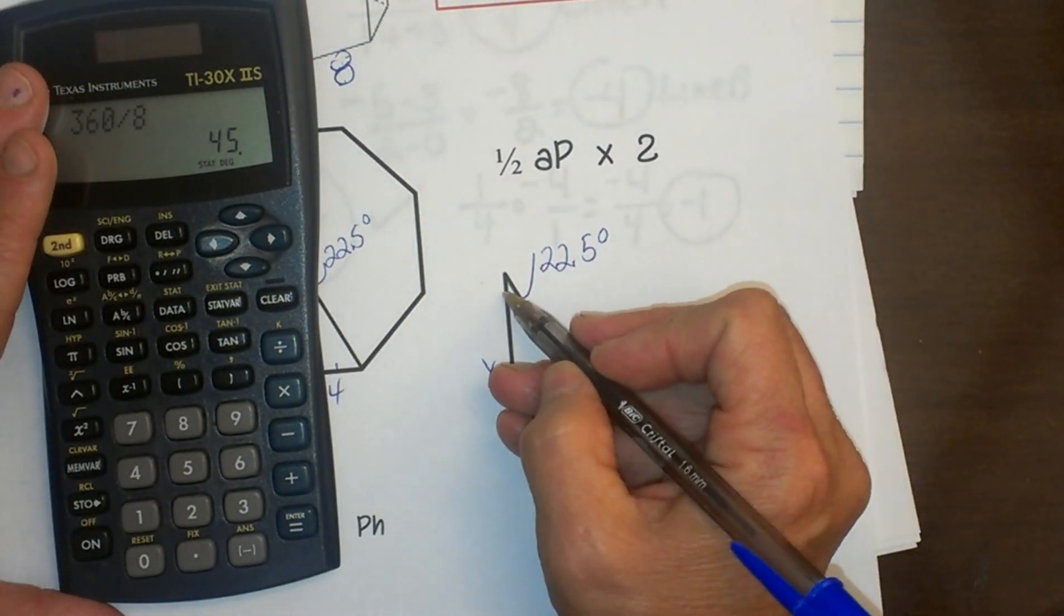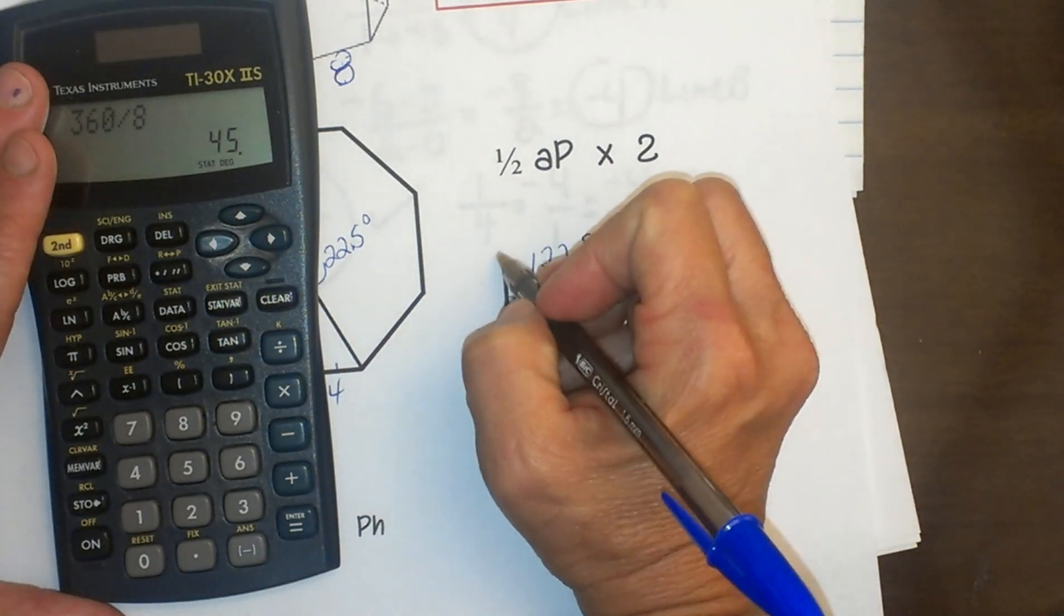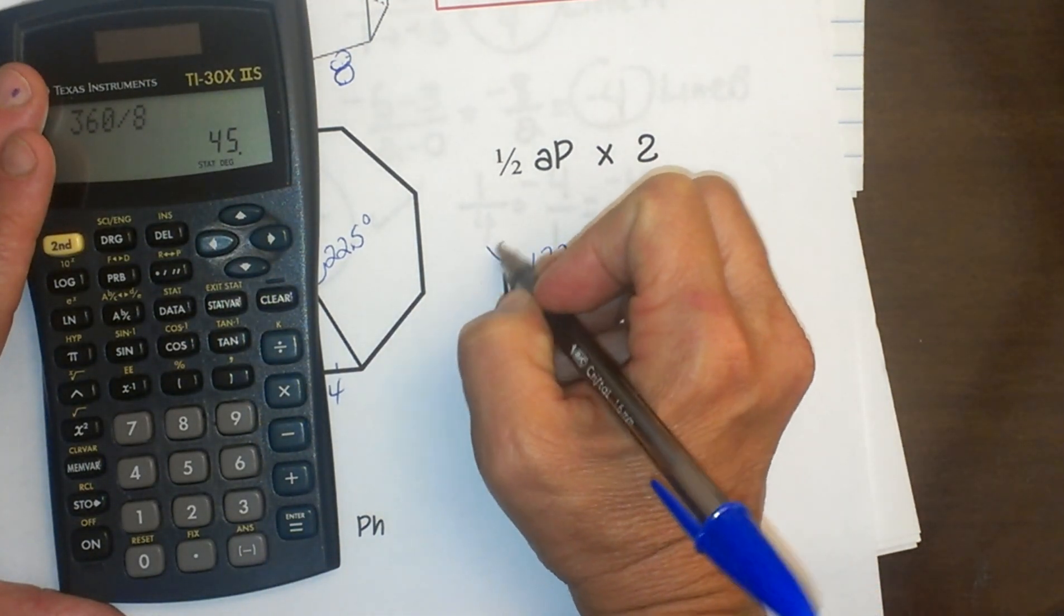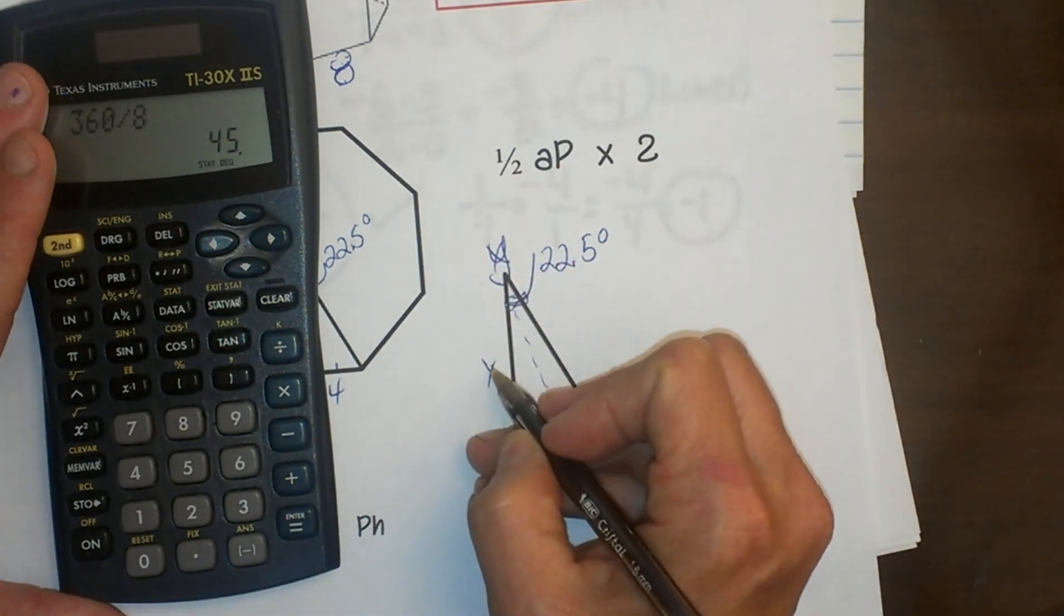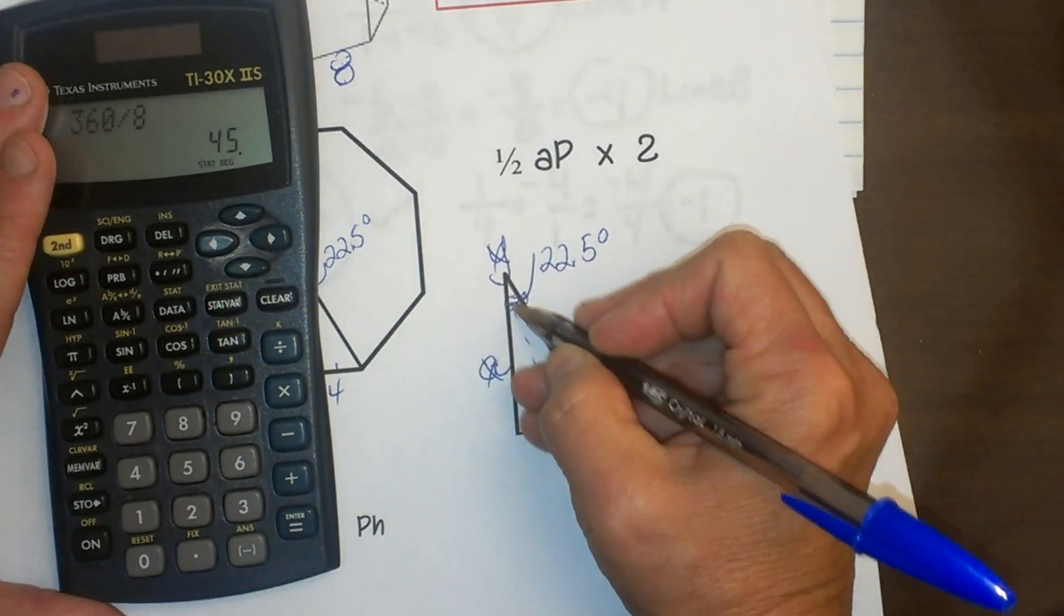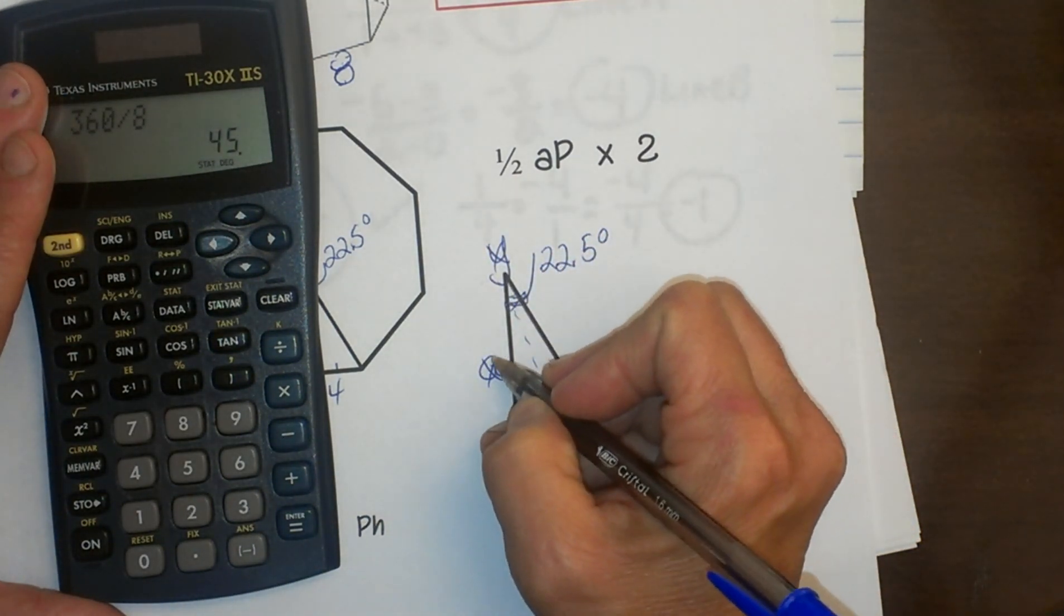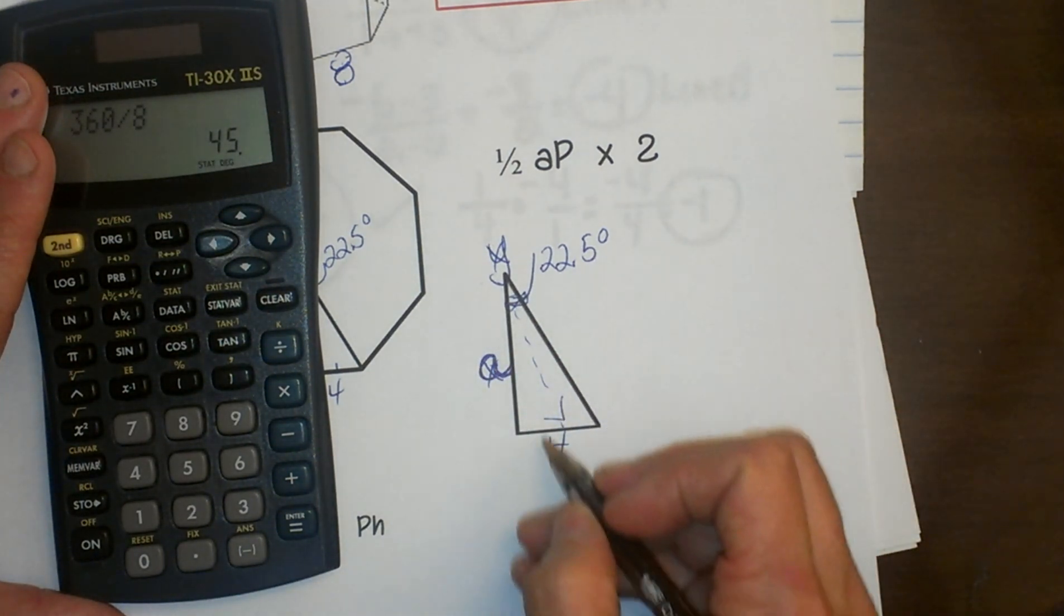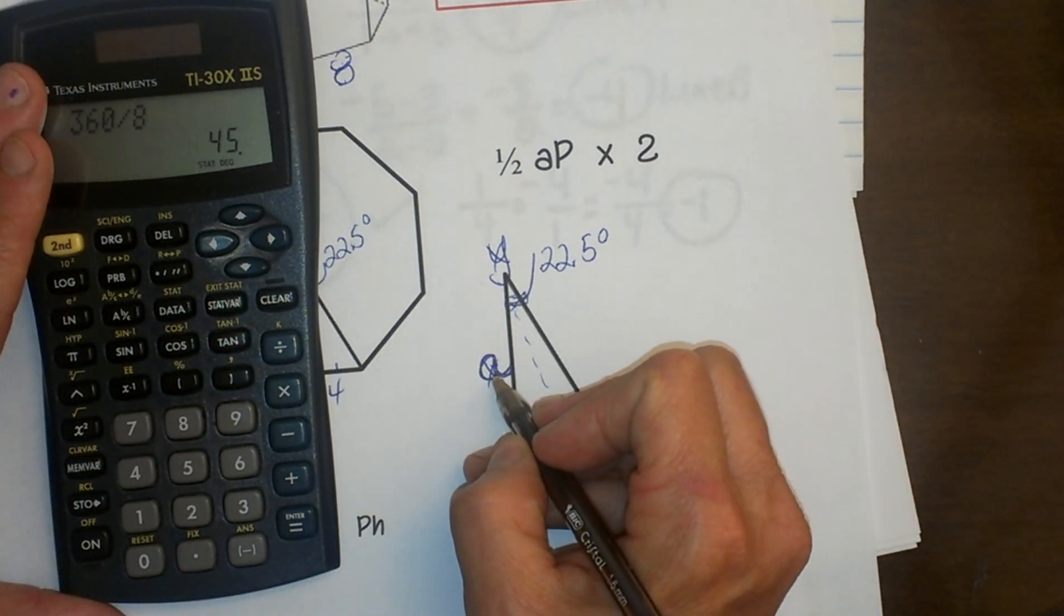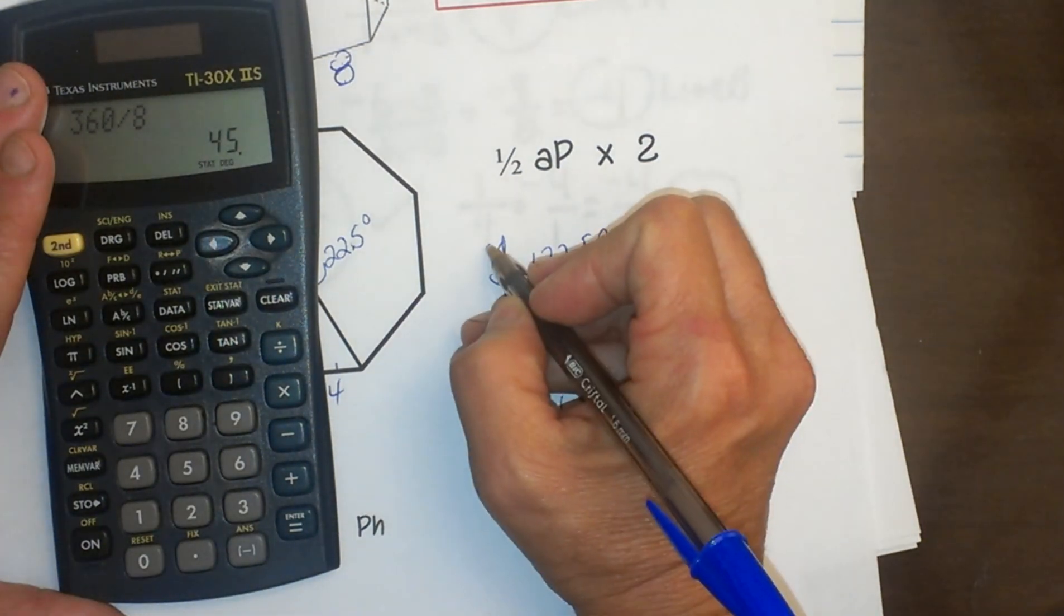Let's see. I've got my angle here. I'll call that angle let's say x, and this is my opposite, or let's call that y because this is my unknown apothem. Opposite and adjacent. So that means my opposite is 4 and my adjacent is unknown. My apothem is my unknown.